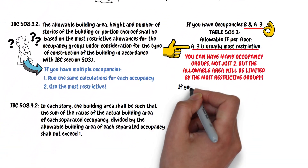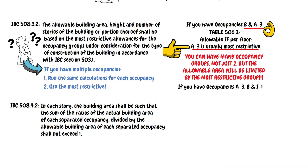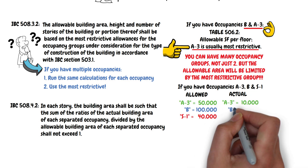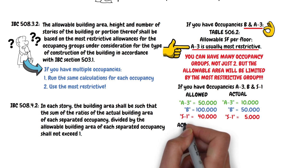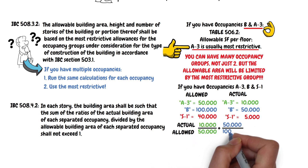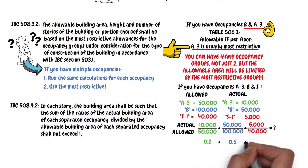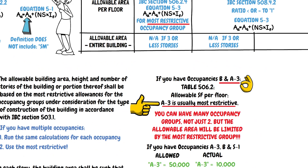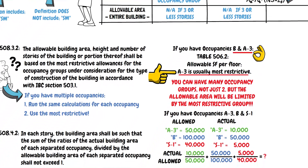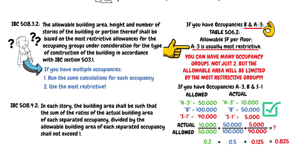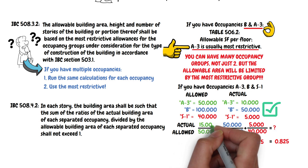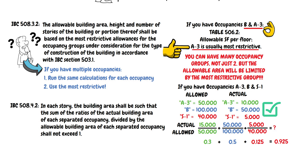Here's an example. Let's say you have a building with Occupancies A3, B, and S1 in the same building. Using made-up numbers, the allowed areas are: A3 — 50,000; B — 100,000; and S1 — 40,000 square feet. Now plug in the actual areas: A3 — 10,000; B — 50,000; and S1 — 5,000 square feet. When we convert the ratios into decimals and add them up, we get a total of 0.825. Per Section 508.4.2, we do not exceed 1, so this is acceptable. We could even make some areas larger — if A3 was 15,000, we would still get 0.925, which still does not exceed 1.